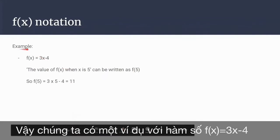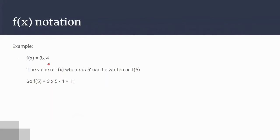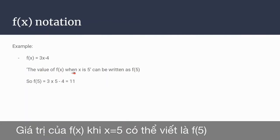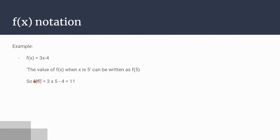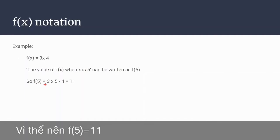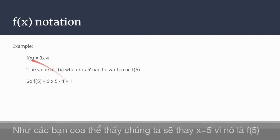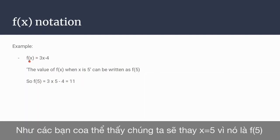So for example, f(x) equals 3x minus 4. The value of f(x) when x is 5 can be written as f(5). So f(5) equals 3 times 5 minus 4, which equals 11. As you can see, we replace x by 5 because it's f(5).